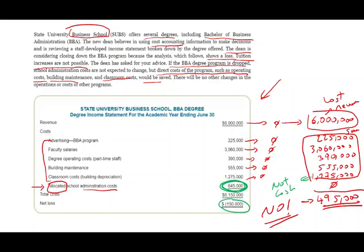Here we are making very extreme assumptions, but the point is that by making those extreme assumptions, you understand the decision-making process. For example, if we can keep only half of the revenue, that's even better. Here we assume we lose all the revenue and eliminate all the expenses just to make the case. Therefore, the recommendation is: we don't close. We don't close.